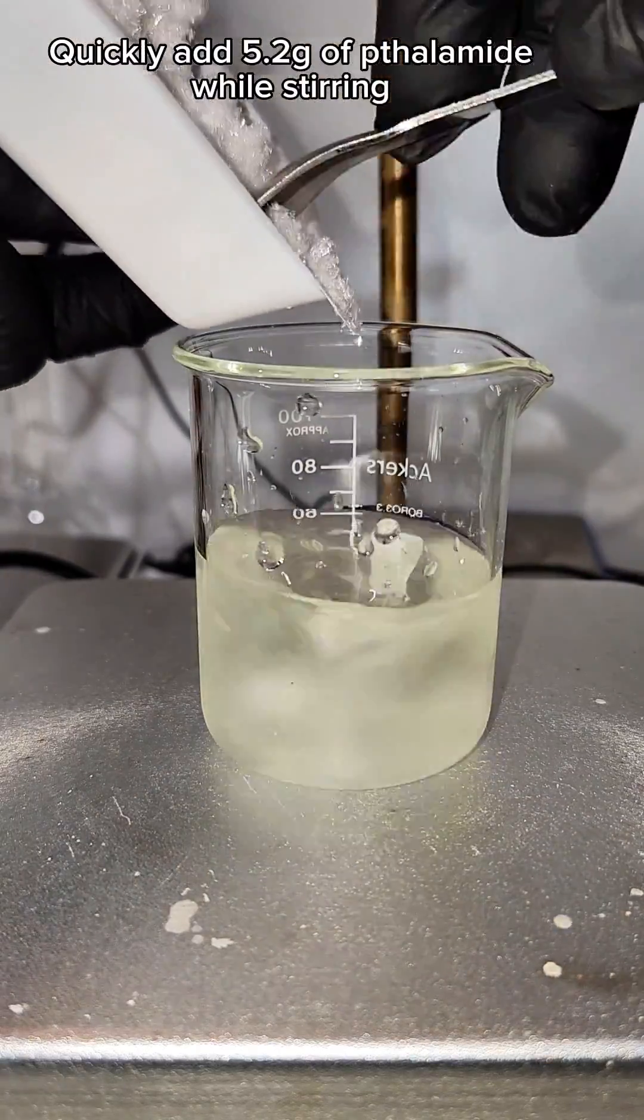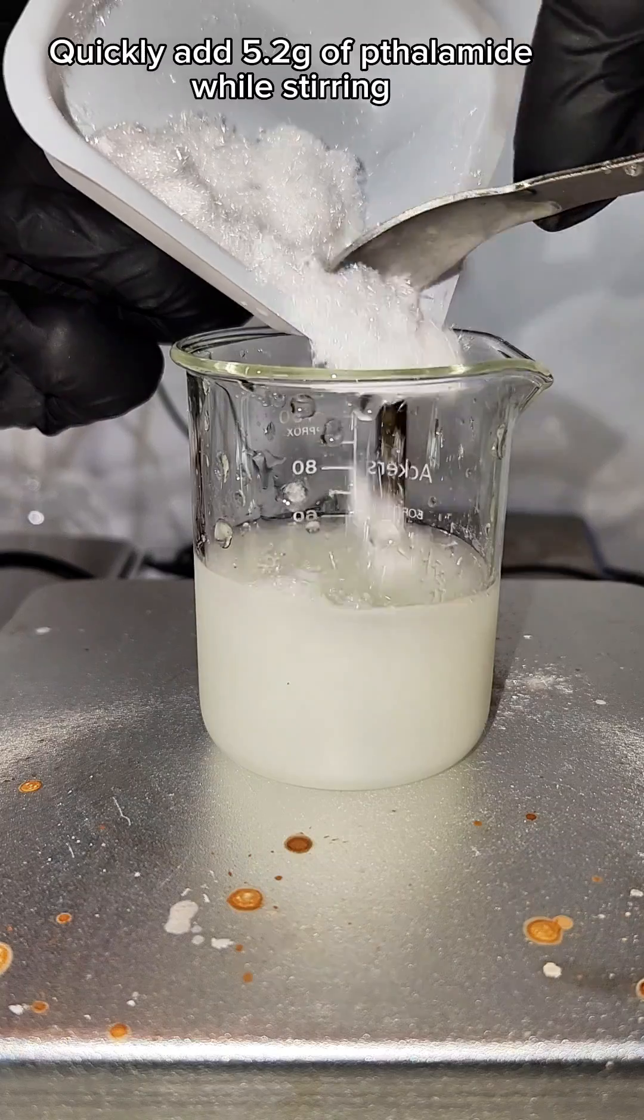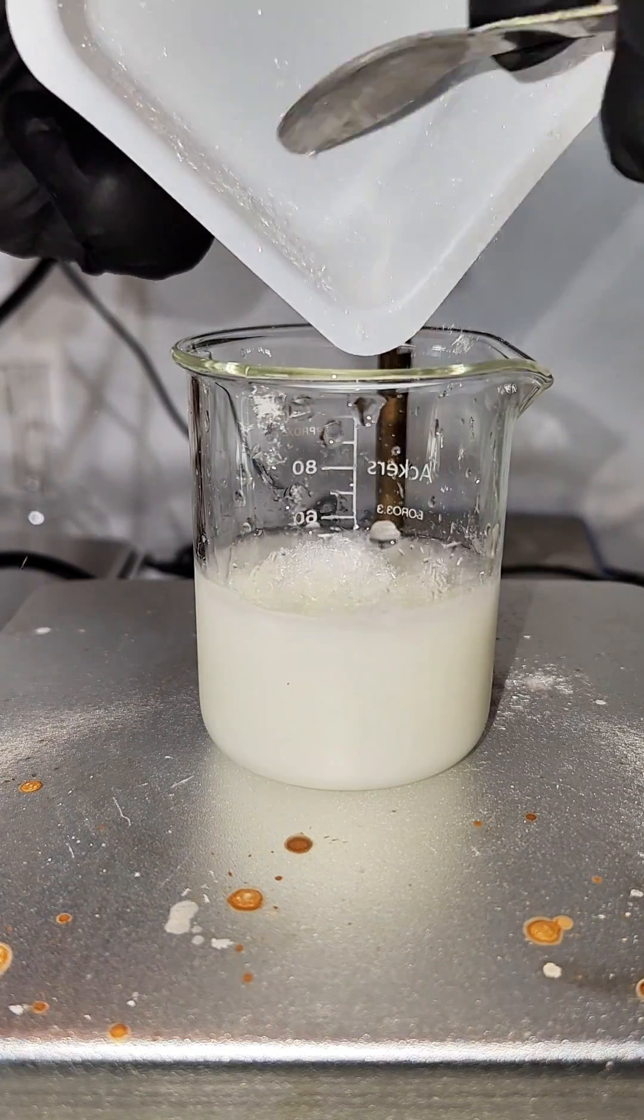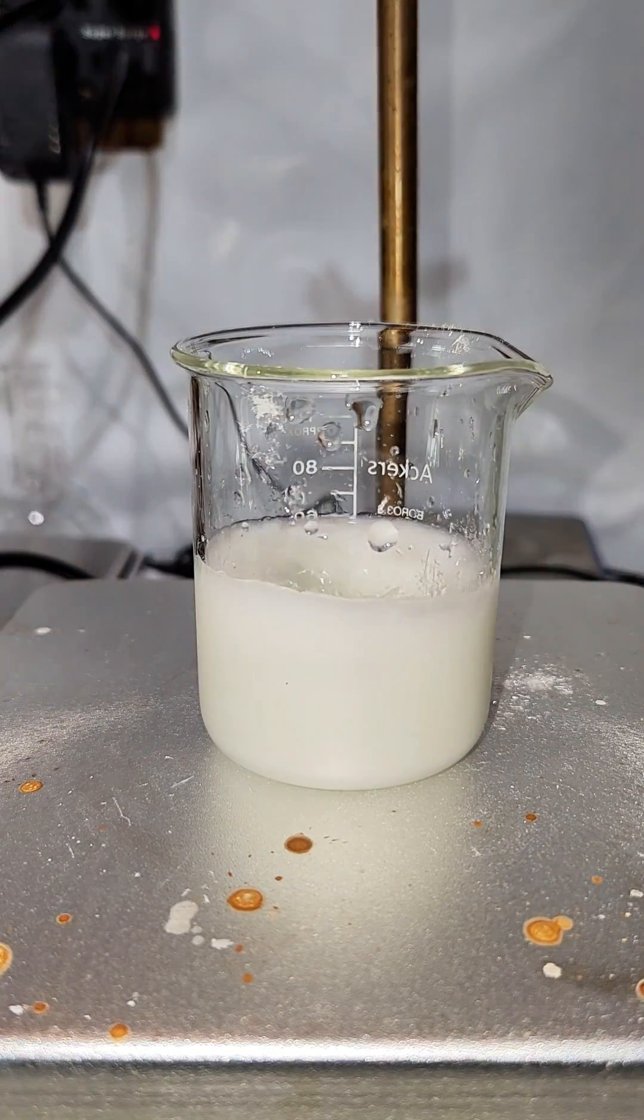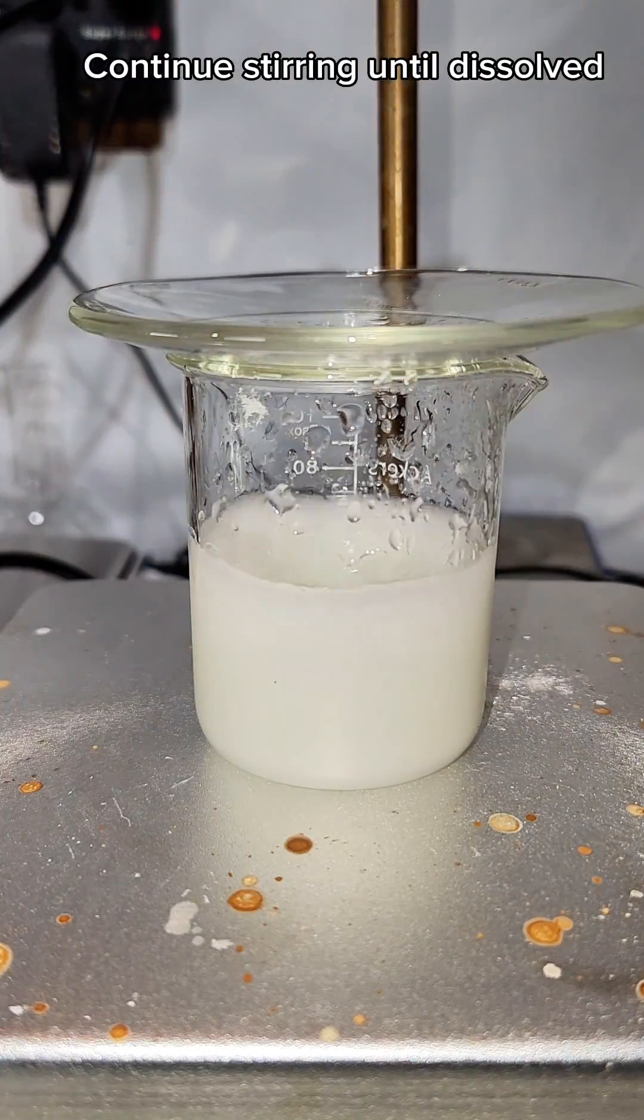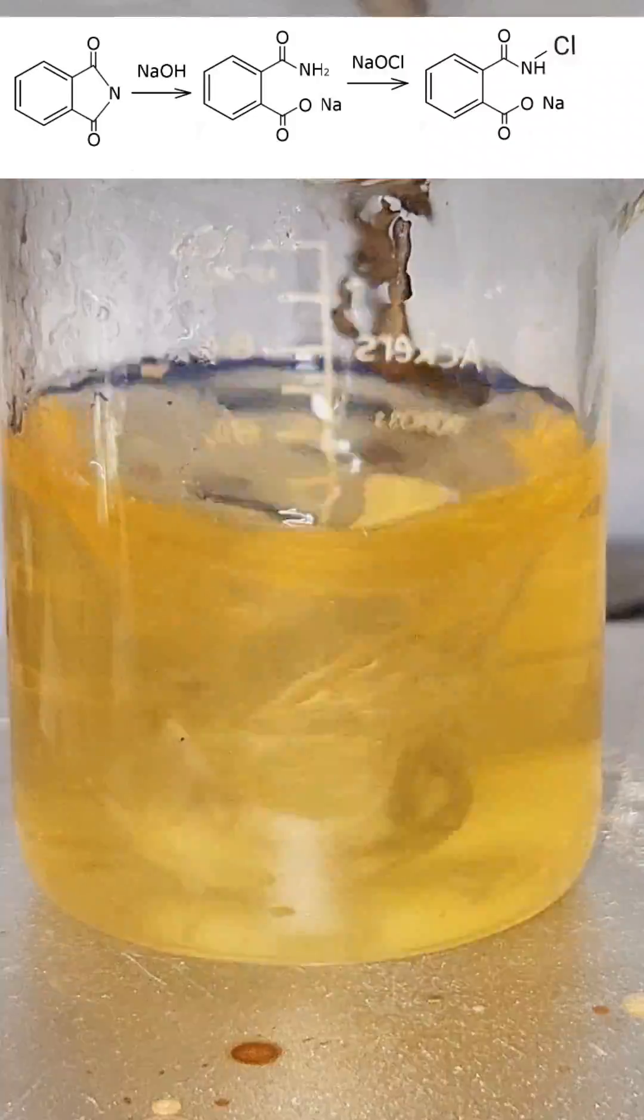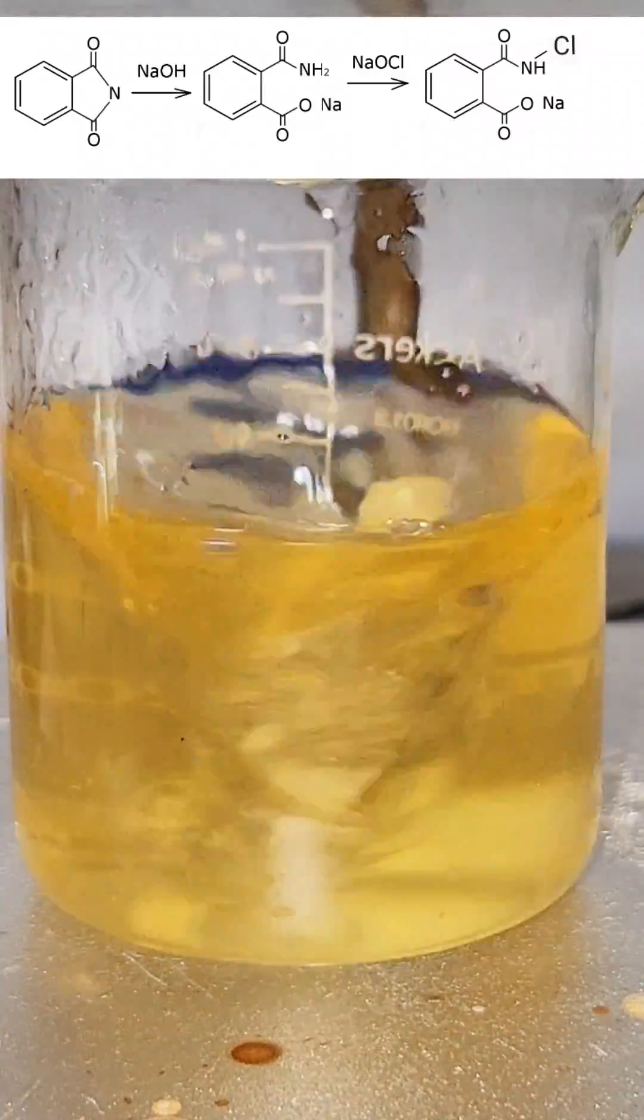I now quickly add 5.2 grams of the thalamite under constant stirring and let it dissolve. During this time the solution will slowly turn yellow. In the first step sodium hydroxide will break the thalamite ring open at the nitrogen and in the second step sodium hypochlorite will attach a chlorine onto that nitrogen.